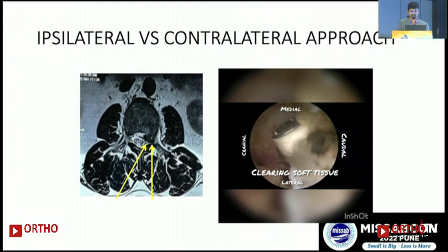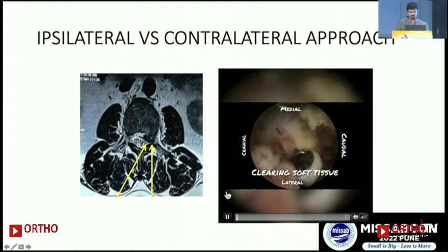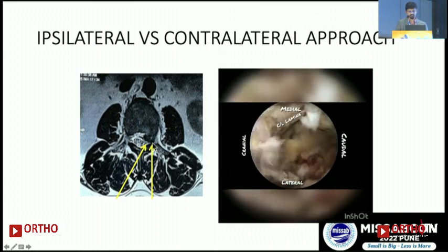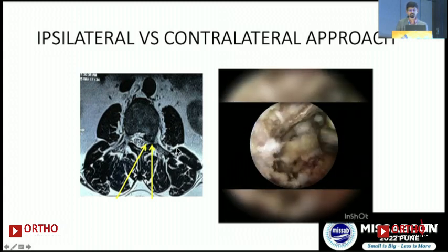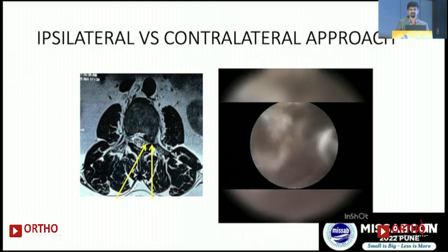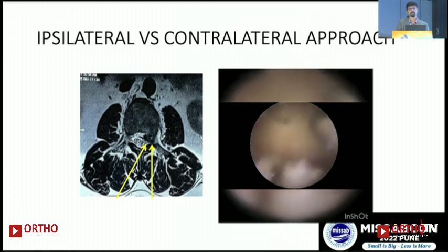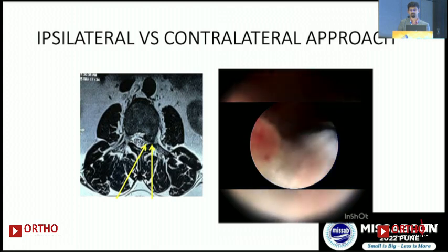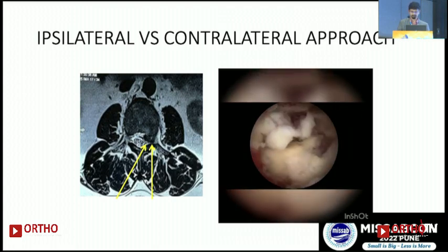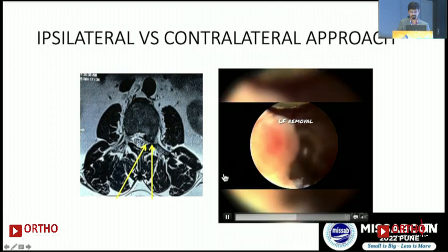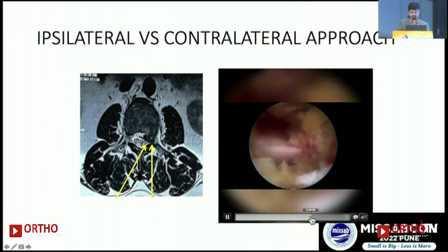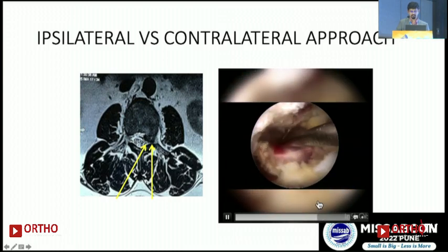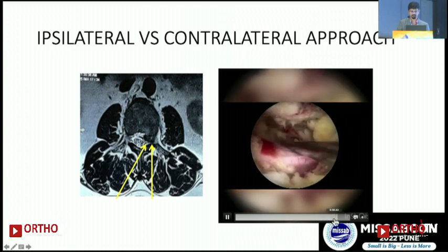This short video demonstrates the upper lumbar disc herniation case. The only difference is that contralateral bony work is performed more extensively with UBE. You can see three nerves: the ipsilateral traversing root, the contralateral exiting root, and the contralateral traversing root. Three-root decompression can be achieved without violating the facet. This shows contralateral discectomy from the axilla of the exiting root, with the disc fragment visible.